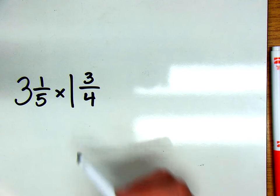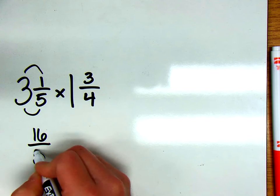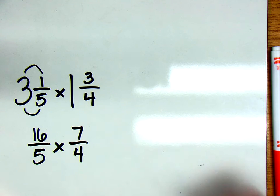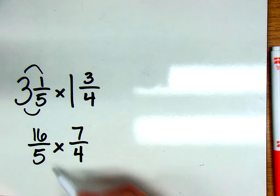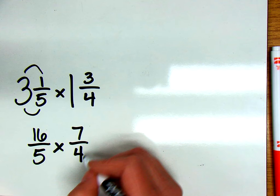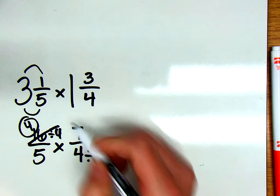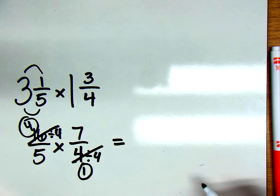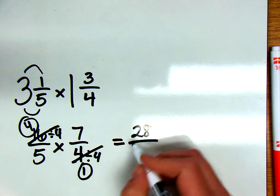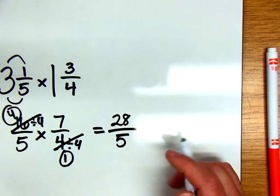Step 1 is rewriting as an improper fraction. So 5 times 3 is 15, plus 1 is 16/5, times 4 times 1 is 4, plus 3 is 7/4. We're going to check first cross-simplifying here. We cannot simplify 5 and 7, those are both prime numbers. We can divide 4 and 16 by 4 though, so we get 4 here and 1 here. Now we can multiply straight across: 4 times 7 is 28 over 5 times 1 is 5.